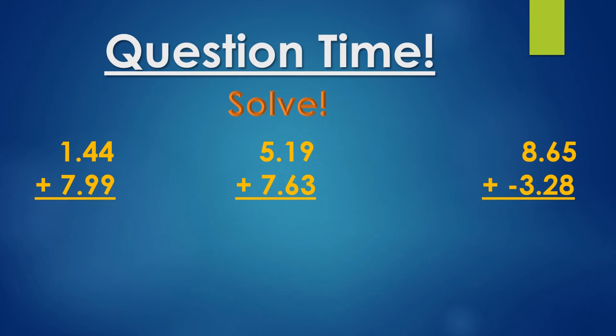The first one is 1.44 plus 7.99. So little decimal, what's four plus nine? Thirteen. We put a three on bottom and a one on top. Now we have that one plus the four is five, plus nine is fourteen. Four and one. And what's two plus seven? Nine. There we go, so our answer is 9.43.